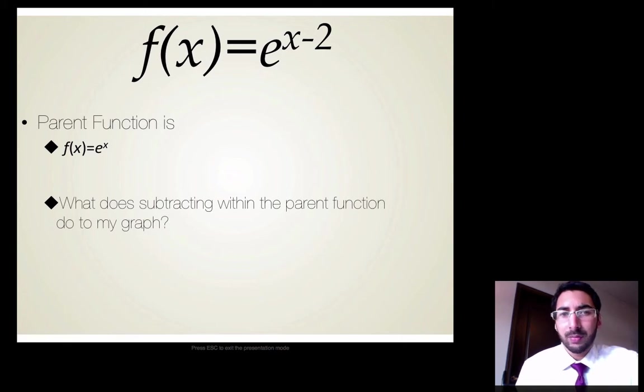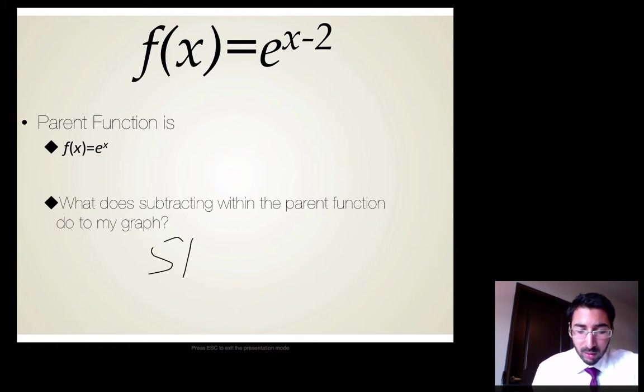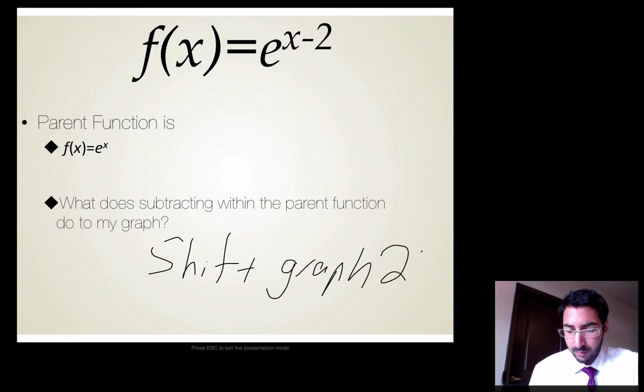So say I have f(x) equals E to the x minus 2. My parent function will be f(x) equals E to the x. And remember, we call that the natural base exponential function. So what transformations have happened or translations? Well, I subtracted 2, and notice where I subtracted 2 from. I subtracted 2 within my parent function. So I subtracted 2 up where the exponent is. So when I subtract 2, just like any other exponential function, that means that I'm going to shift my graph 2 units.